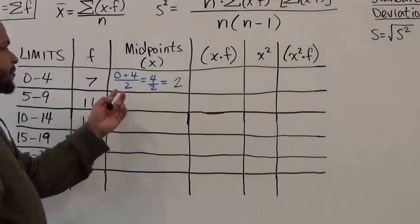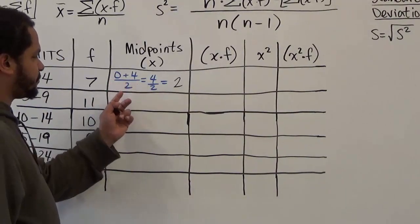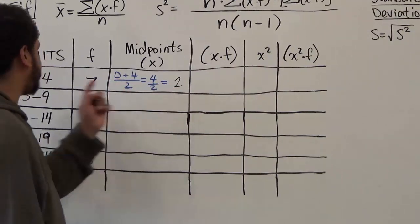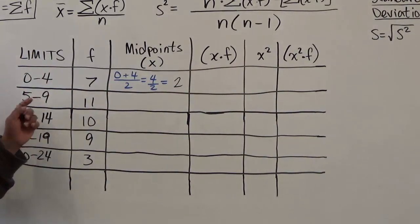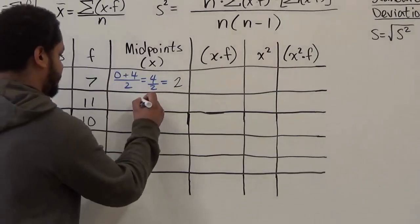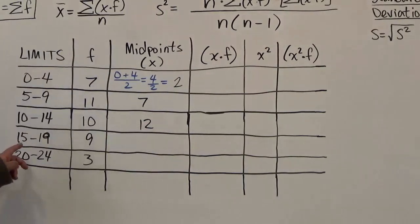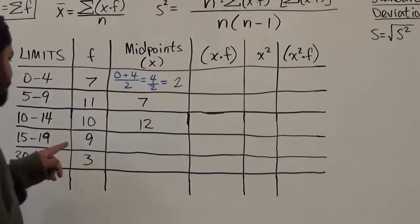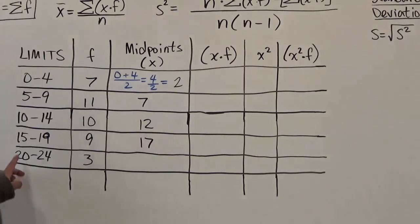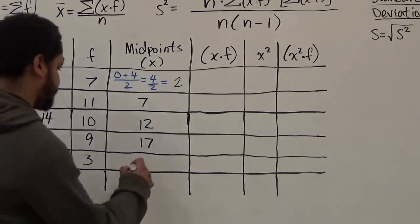For the next limit, you follow the same instruction — take the midrange of the two data values. The midrange of five and nine is fourteen divided by two, which gives us seven. The midrange of ten and fourteen is twenty-four divided by two, which gives us twelve. The midrange of fifteen and nineteen is thirty-four divided by two, which is seventeen. The midrange of twenty and twenty-four is forty-four divided by two, which is twenty-two.